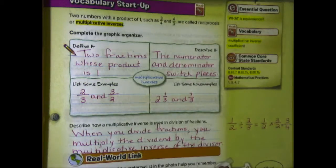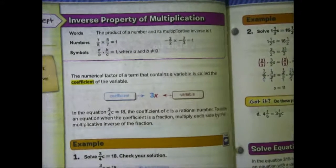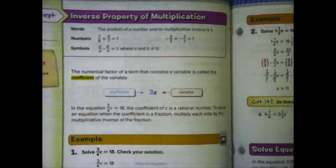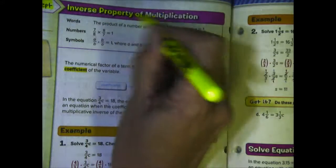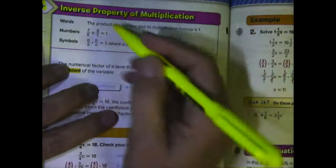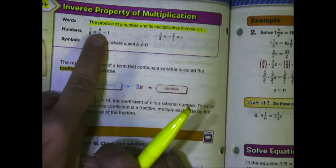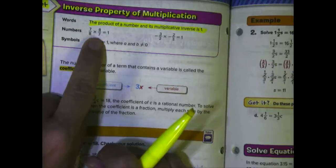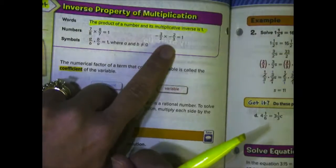Now that we've reviewed multiplicative inverses, let's turn to page 112 and look at our key concept: the inverse property of multiplication. The inverse property of multiplication states that the product of a number and its multiplicative inverse equals one. For example, seven-eighths times eight-sevenths equals one — seven times eight is 56, eight times seven is 56, and 56 divided by 56 is one. Similarly, negative three over two times negative two over three gives positive six over six, or one.